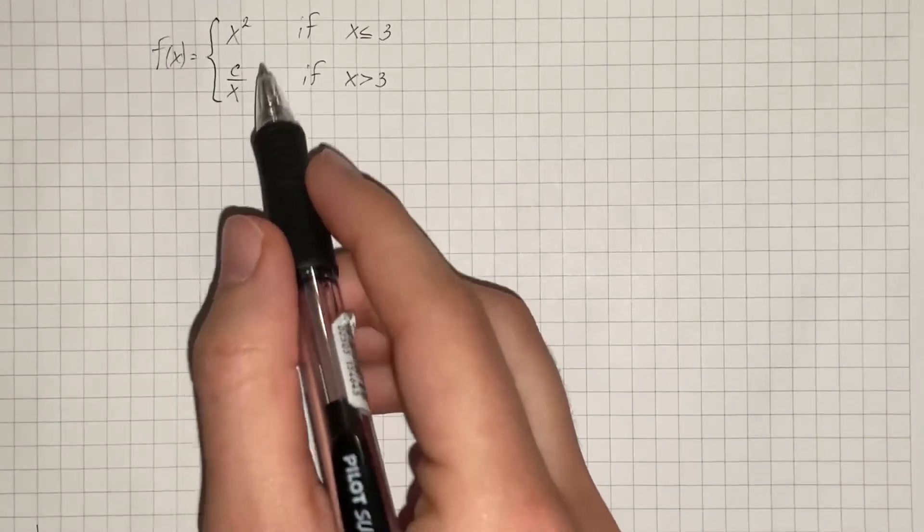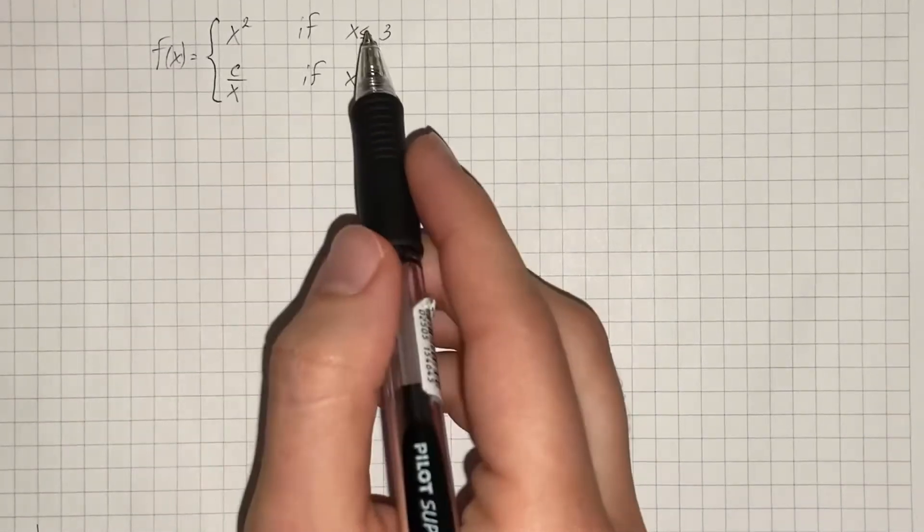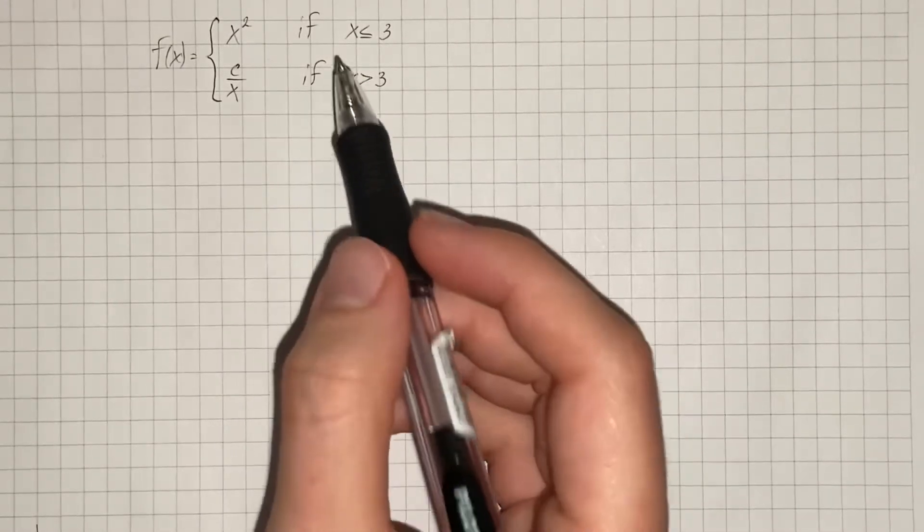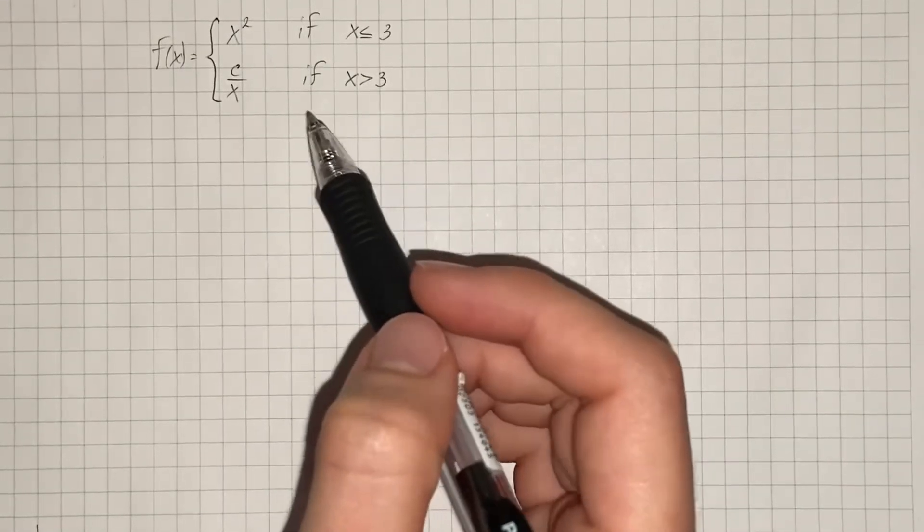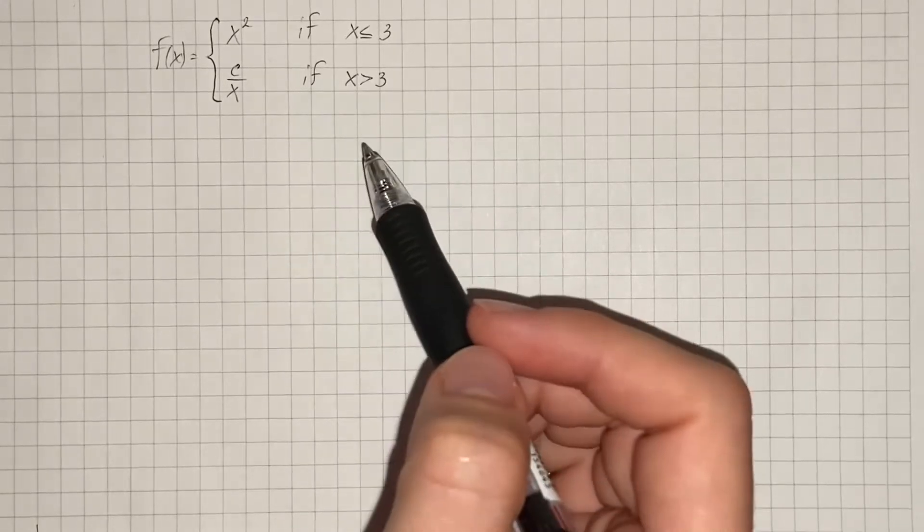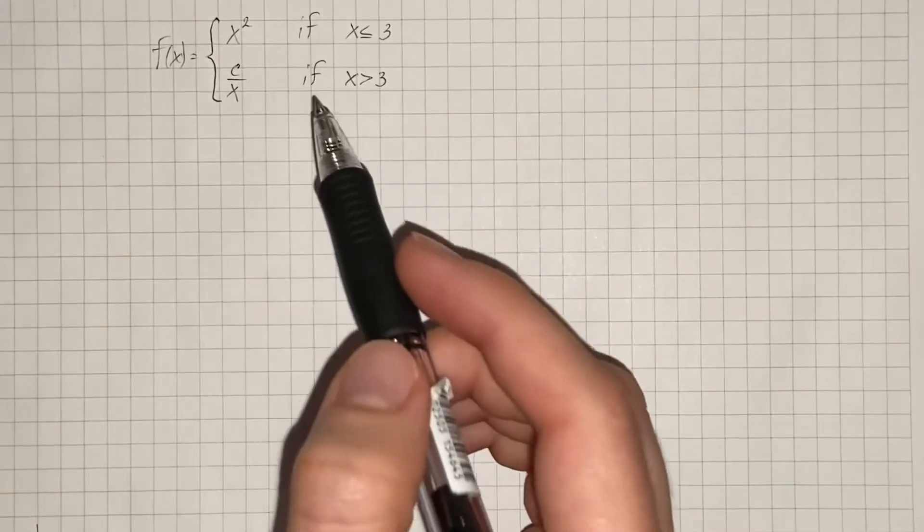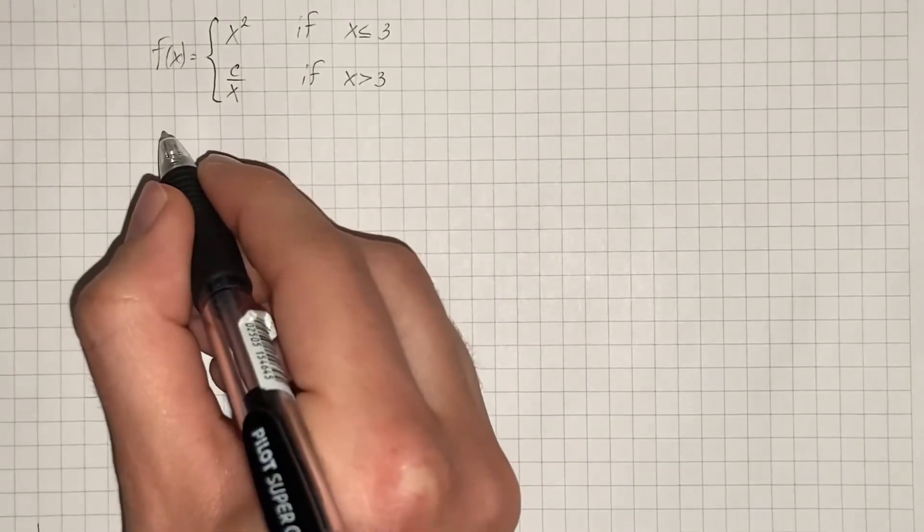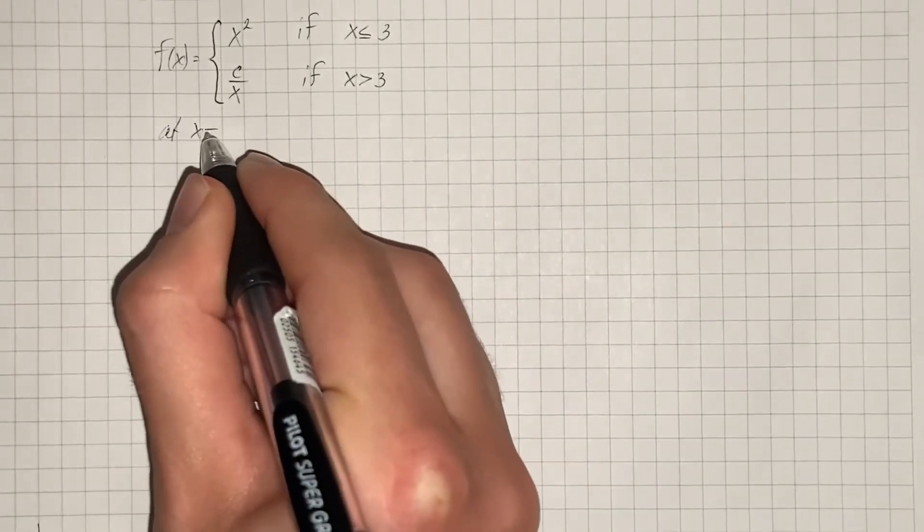We have to find c so that the given function is continuous on the entire number line. Since the given function is a polynomial function for all x less than 3 and is continuous for all x greater than 3, we're going to check continuity at x equals 3.